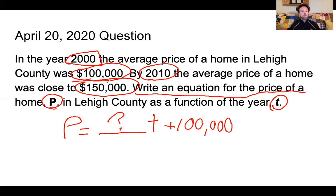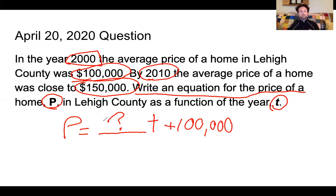We're going to use this to make some predictions and see if this was actually a linear function based on actual prices. Tomorrow we'll look at this again, but I want you to try your best to write this equation giving the price of a home in Lehigh County starting with the year 2000 as a function of the year, using T as your variable. Good luck — as always, if you have any questions, please come and find me. Otherwise, have a great rest of your day.